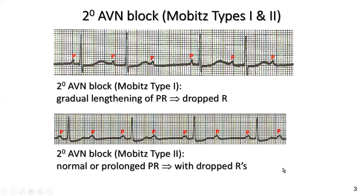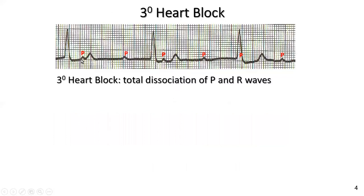I would be cautious all the way from first degree to third degree AV nodal block. In third degree, there is total dissociation of the P wave regularity and the R wave regularity. On this record you can see six P waves but only three R waves, and they're completely out of synchrony — no pattern between the P waves and the R waves. This is what we call third degree AV nodal block, or third degree heart block — the same thing.